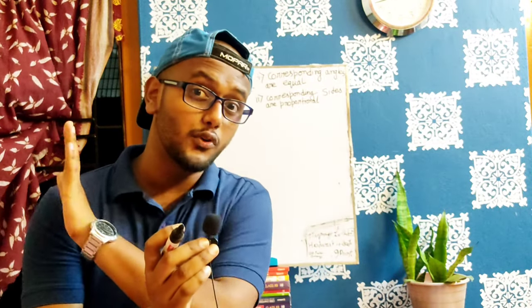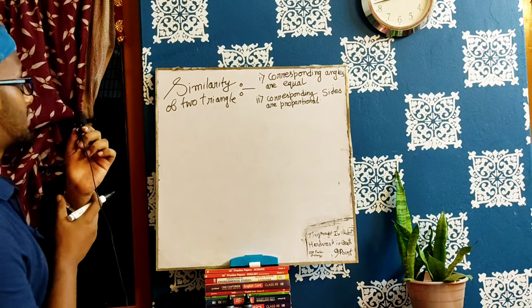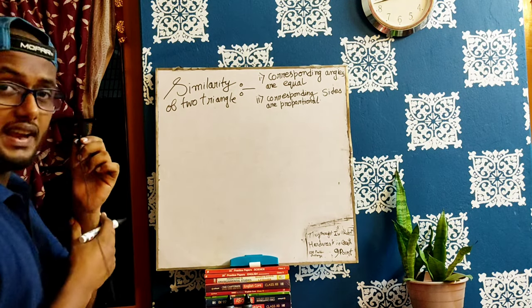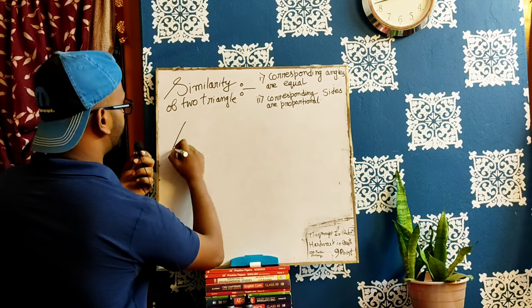Now, similarity of a triangle and equality of a triangle is not the same. If the triangle is congruent, that is a different topic, and if the triangle is similar, that is a different topic. These are two separate concepts.